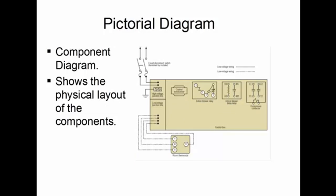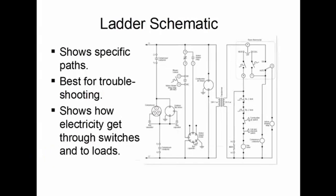Ladder Schematics. This diagram you'll see in almost every piece of equipment that you're working on, both residentially and commercially, because it shows specific paths for the current to flow in electrical connections. So it is very simplified so that you can identify each circuit piece by piece, part by part, and you use this as your road map to troubleshoot. And it is the best troubleshooting tool that you have. It shows the interconnection and how the current flows through the switches to each of the loads and so forth.